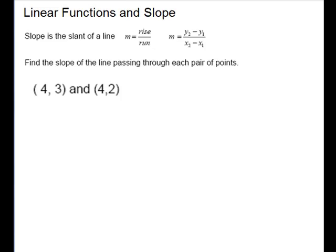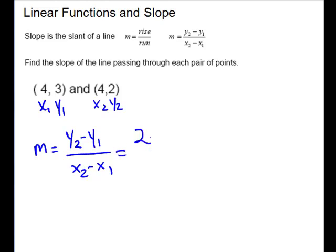For our next example, we can see right off that the x's this time are the same, and so it's going to give us a zero in the denominator. Let's go ahead and go through the steps. So this will be x1, y1, x2, y2. Write your formula, change in y's over change in x's. Y2 is 2 minus y1, which is 3, over 4 minus 4. So this gives us negative 1 over 0.